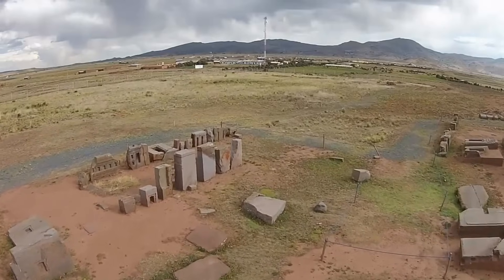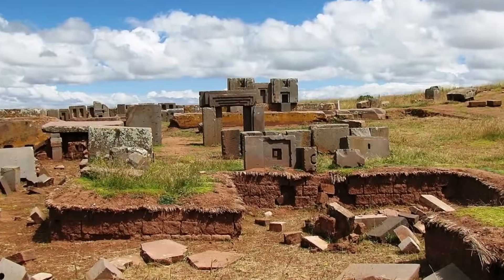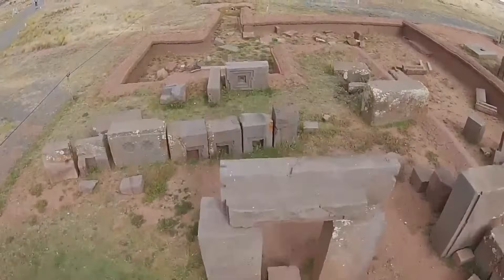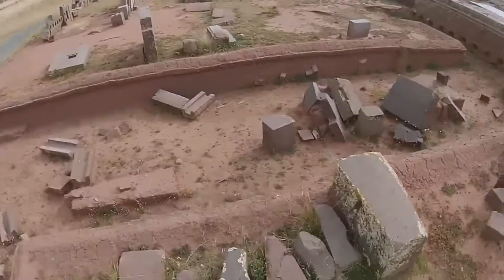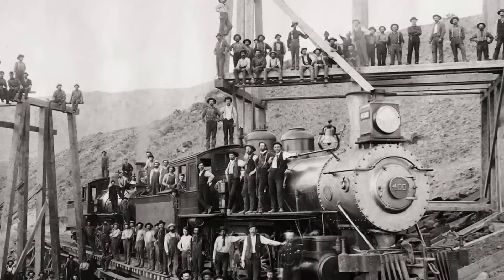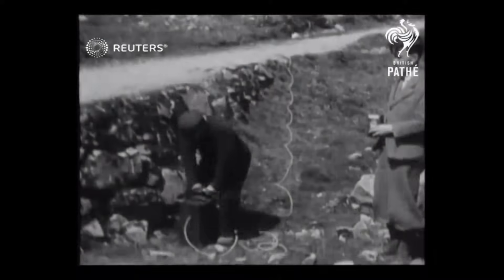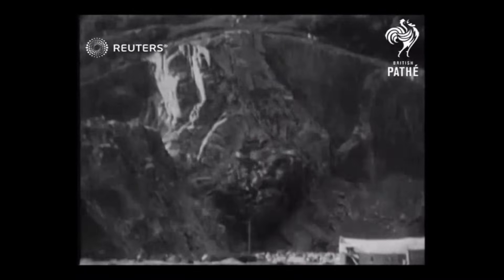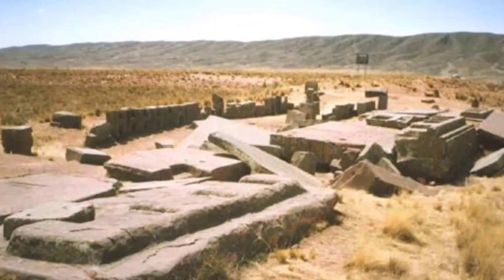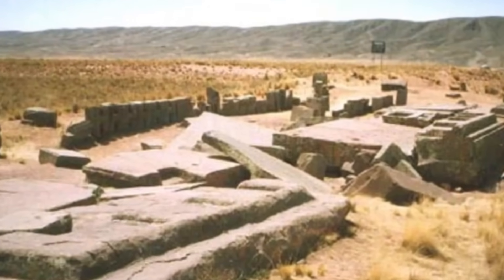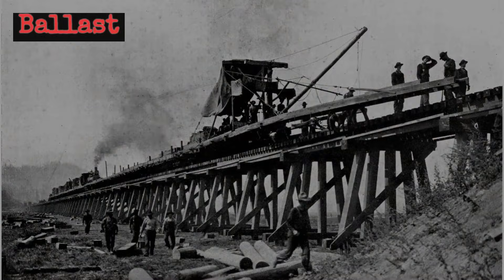But the story of Puma Punku's perfection is not simply one of ancient skill. The site's current disorder bears witness to a far less careful age. In the late 1800s, as railways carved new paths across Bolivia, dynamite crews and stone scavengers descended on the ruins. Massive blocks were toppled, split, and carted off to serve as ballast for train tracks and bridges.